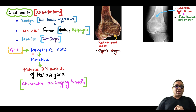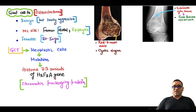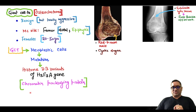On cytogenetic analysis of this tumor, the tumor cells will have a mutation in histone 3.3 variants of a gene known as H3F3A, which is required for chromatin packaging.